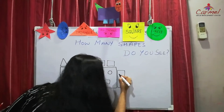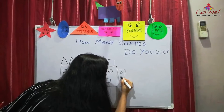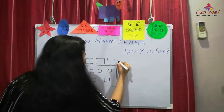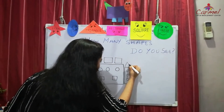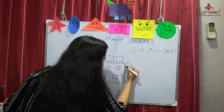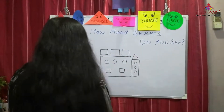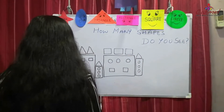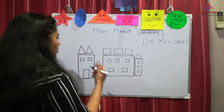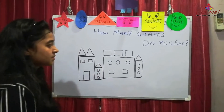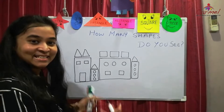And here I am drawing three circles, and on top a triangle. Now children, find out what is this? It's a castle!